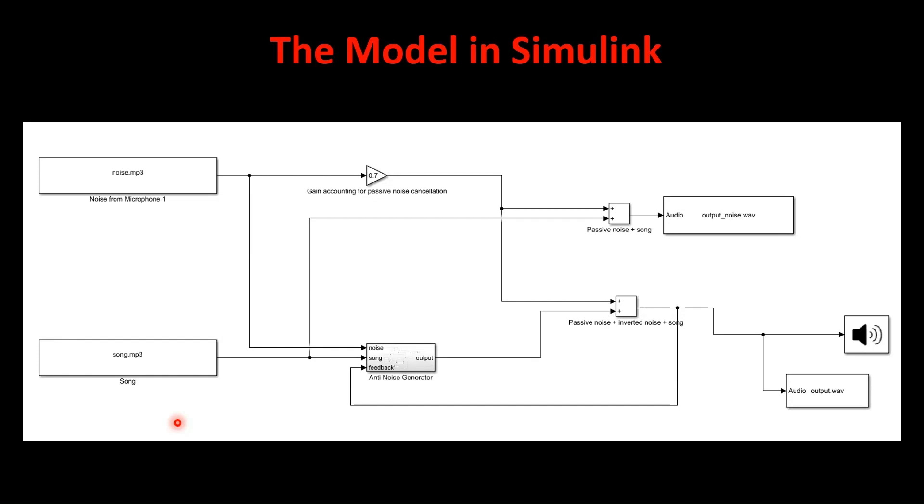In this, we will be having two microphones. One is outside the ear cup and other one is inside the ear cup. The inner one is used as a feedback and the outer one is for measuring the noise to make the anti-noise signal. As you can see on the screen, this is the model we created together. This is the noise file or you can say that this is the outer mic. This is the song MP3 or the actual clean data which is coming to the headphones through wires or Bluetooth, and this gain is due to the passive noise cancellation, that is the foam and the parts which cover your ears.